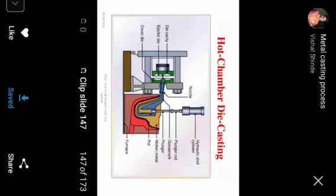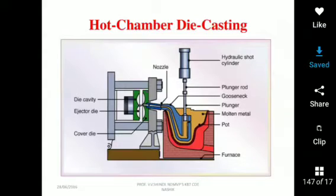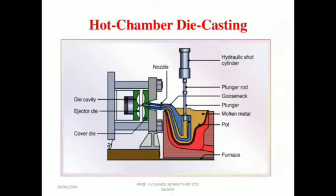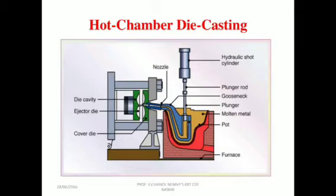Now we are going for hot chamber die casting. The main parts in the hot chamber die casting are: hydraulic short cylinder, plunger rod, gooseneck, plunger, molten metal, a pot furnace, nozzle, die cavity, ejector die, and cover die. Here you can observe all the total parts in the hot chamber die casting.